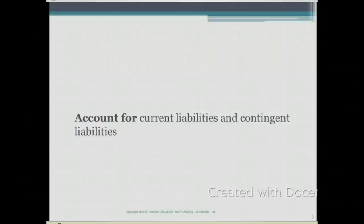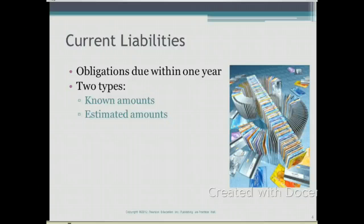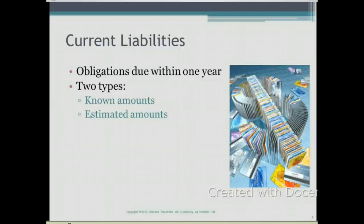In this section, we are going to learn how to account for current liabilities and contingent liabilities. Current liabilities are liabilities that are due within one year or less. Contingent liabilities relate to liabilities that are dependent on some event. Current liabilities are obligations due within one year, and there are two types: known amounts and estimated amounts.